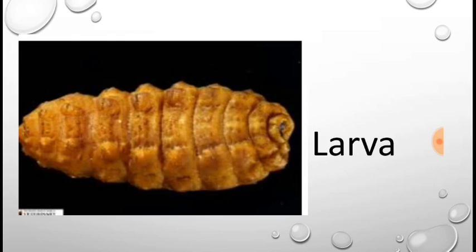Stage two: larva. During this time, the insect grows a lot and eats a lot. The insect looks very different now from how it will look as an adult.